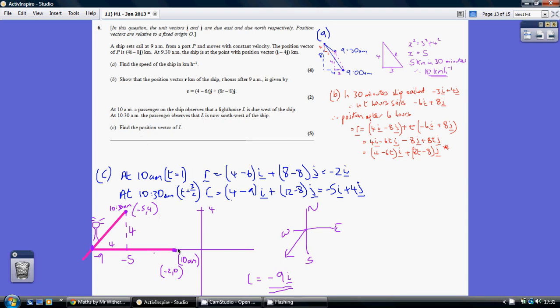Now taking into account where the lighthouse is, at 10 o'clock the lighthouse is due west of him, so it's somewhere along the x-axis, somewhere along here. And at 10:30am we're told that the lighthouse is exactly southwest of him. So for every 4 down he's going to be 4 across. So these two lines cross here at minus 9, 0 in coordinate terms, and in vector terms that's minus 9i.